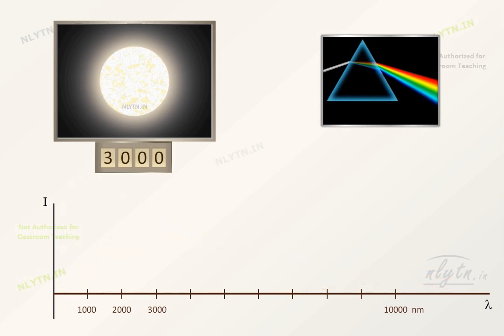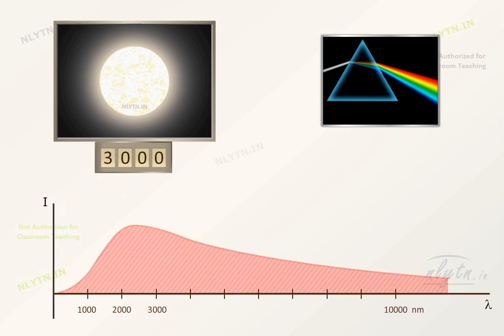Note that, area under this curve gives the total power of radiation, which is equal to this term, as given by Stefan's law. So, though the total power of radiation is simply related to the temperature by this equation, the distribution of energy over various wavelengths is not that simple.